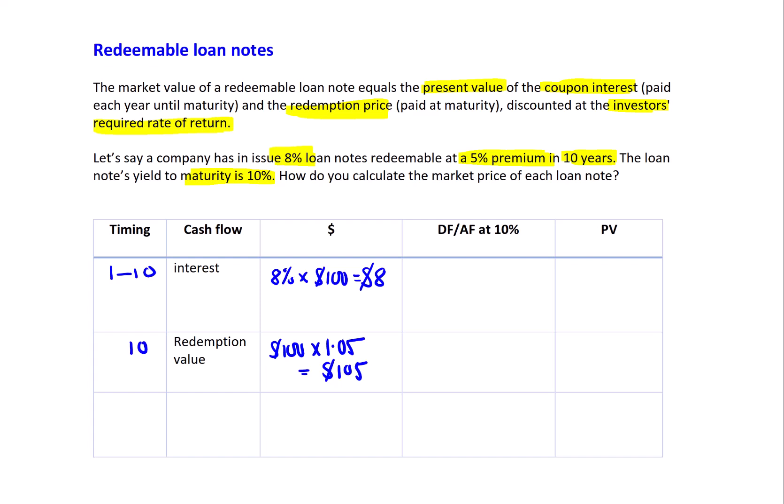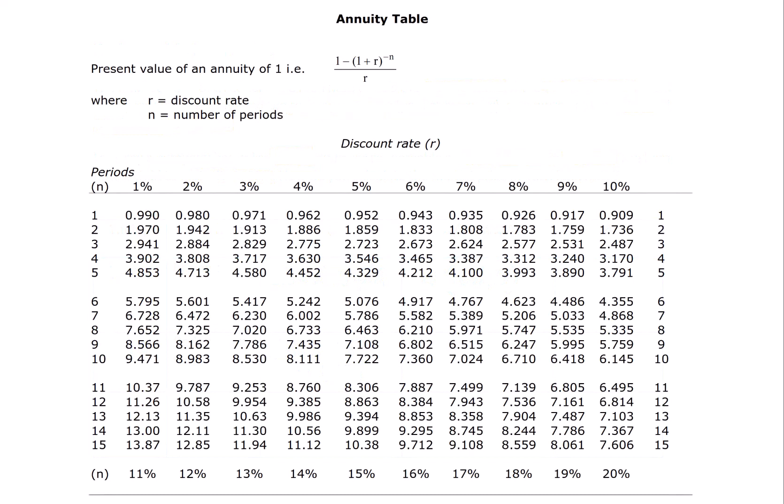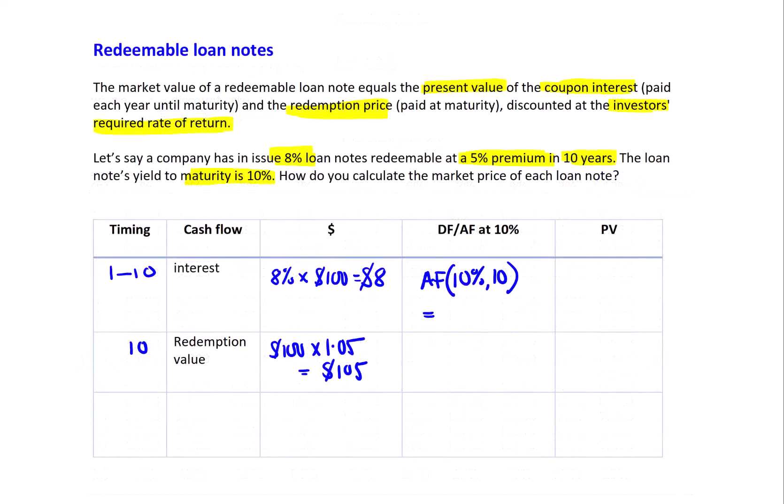We now need to discount those cash flows. The interest is payable every year for 10 years, so that's an annuity factor. It'll be the annuity factor for 10 years at 10%. We need to go to the discount tables to find that annuity factor. Here we have the annuity table, and we need 10% for 10 years. That equates to 6.145.